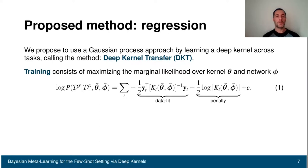At training time, we maximize the marginal likelihood over the kernel parameter theta and the network weight phi. This has a closed form expression, as you can see here. We have a data fit and a penalty term. The penalty term is a form of Occam's razor, model selection.